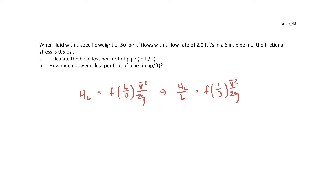Now let's substitute in for the friction factor. We're given the frictional stress in the problem statement, and that's related to the friction factor. The friction factor is a dimensionless wall shear stress — specifically, four times the wall shear stress made dimensionless by the dynamic pressure in the pipe. This is the Darcy friction factor; the factor of four is a historical addition, but it's fundamentally just a dimensionless wall shear stress.